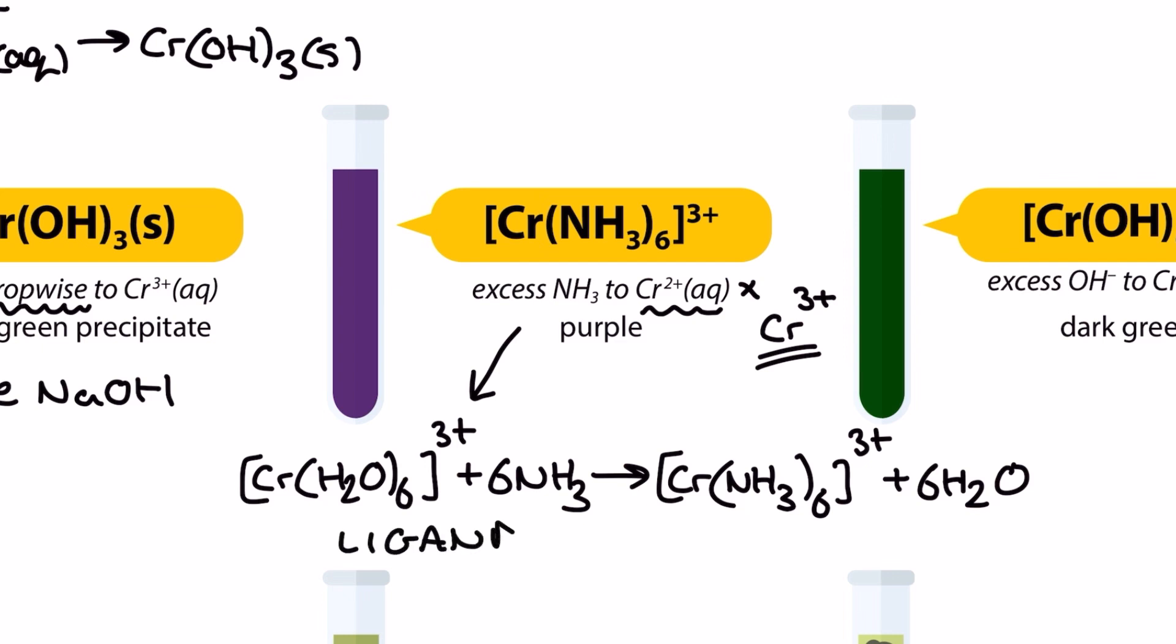The chromium 3 hexa aqua complex ion can be seen here in a ligand substitution reaction with the 6 NH3s to form a new complex ion with a different color because of the different ligands. The purple shade is now darker.